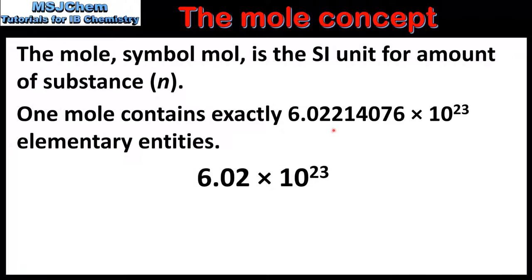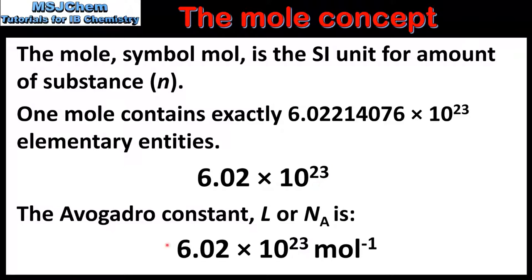This number, which is known as the Avogadro number, is usually rounded to 3 significant figures, which we can see here. The Avogadro constant, which is given the symbol L or NA, is numerically equivalent to the Avogadro number. The difference between the two is that the Avogadro number is dimensionless in that it has no units, whereas the unit of the Avogadro constant is the reciprocal of the amount of substance.